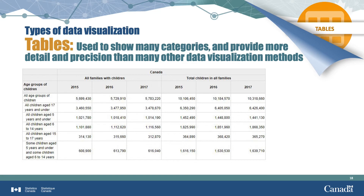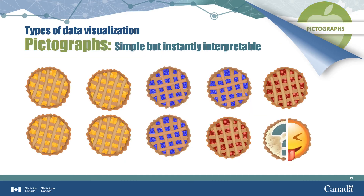Tables are used to show many categories and provide more detail and precision than many other data visualization methods. In this table, we see the number of families with children compared to the total number of children in all families for different age ranges of children. A pictograph is the representation of data using images and is one of the simplest ways to represent statistical data. The popularity of different kinds of pie is represented by the number of pies — in this pictograph, each pie represents 10 individuals. While a pictograph has very low precision, our brains interpret the message instantly.